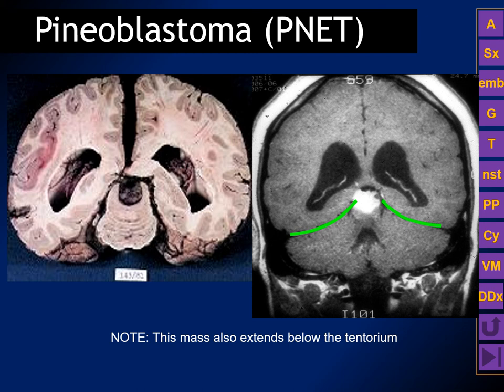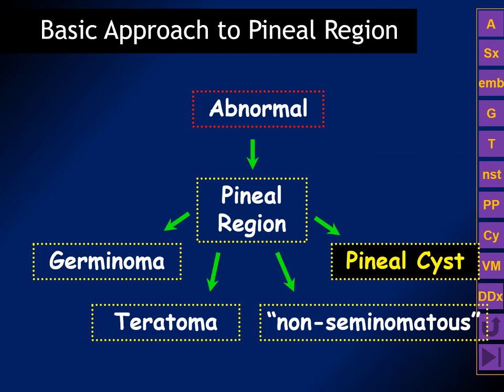Important pineal region teaching points: pineal parenchymal tumors have an explosion of pineal calcifications; pineoblastomas can have restricted diffusion; pineal teratomas and lipomas can have lipid signal intensity; pineal lesions in patients with a known malignancy should include the possibility of metastatic disease in the differential; and pineal cysts and arachnoid cysts will show fluid signal similar to CSF.